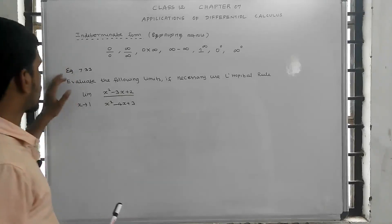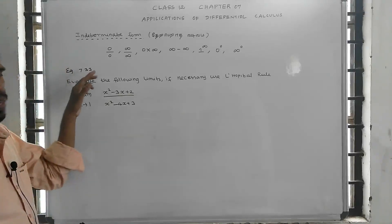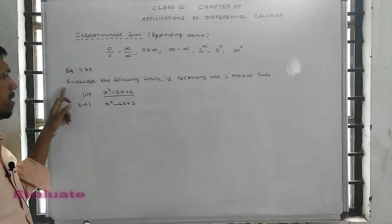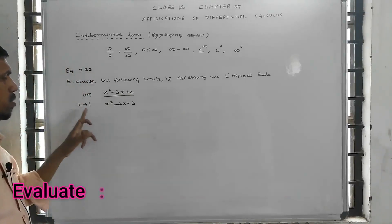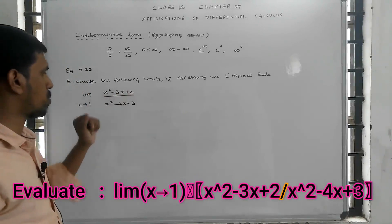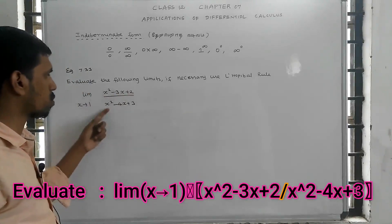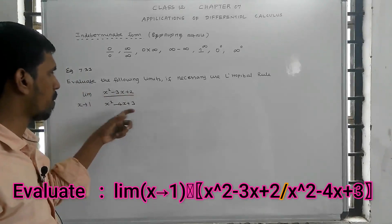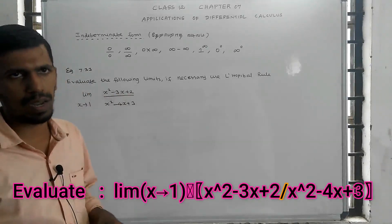Salamat akim students. Example 7.33: Evaluate the limit as x tends to 1 of x squared minus 3x plus 2, divided by x squared minus 4x plus 3.